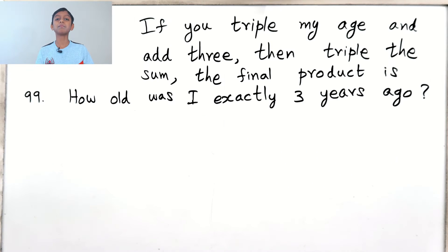Hi guys, in this video let's do an age problem. Let's see what the problem is. If you triple my age and add three, then triple the sum, the final product is 99. How old was I exactly three years ago?